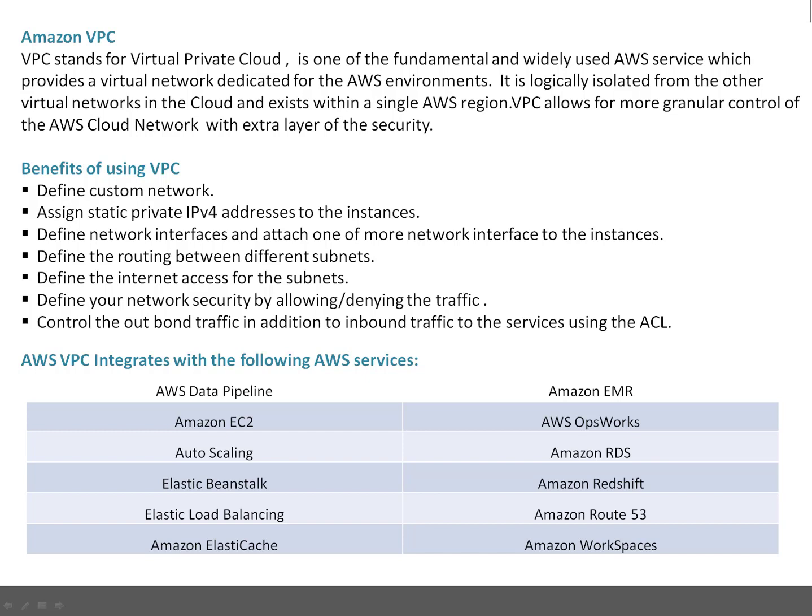What are the benefits of using a VPC? First, you can define your custom network. You can assign static private IPv4 addresses to instances. You can define network interfaces and attach one or more network interfaces to instances. You can also define routing between different subnets and define internet access for subnets — meaning which subnet can access the internet.